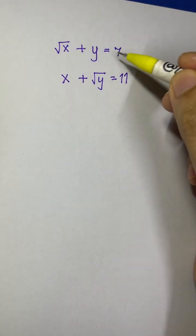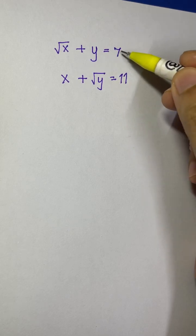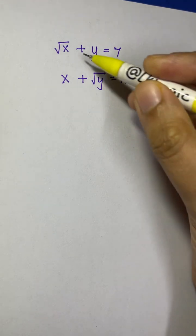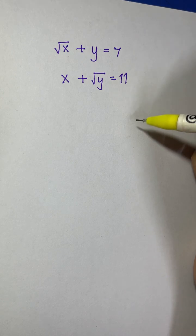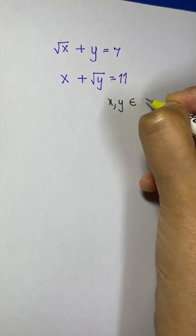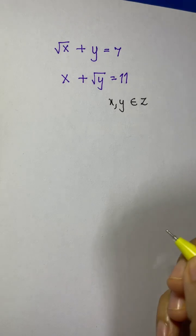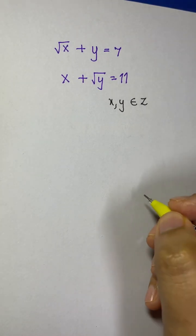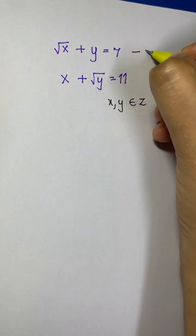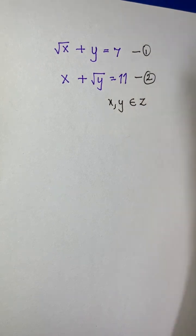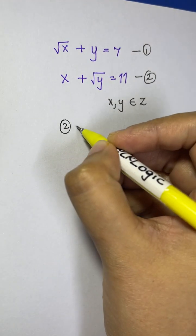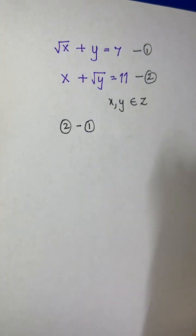So first of all, I have two equations: one equals 7 on the right-hand side and one equals 11 on the right-hand side. X and Y here belong to the integer set — they are integers. Let this be equation one and this be equation two. So you can subtract equation one from equation two to start solving.